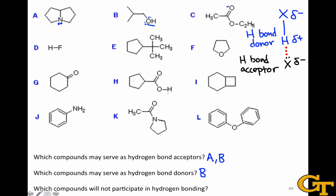Molecule C includes two heteroatoms — two oxygens — each of which has two lone pairs, and so C can, like A and B, act as a hydrogen bond acceptor. However, like A, the heteroatoms in C are not bonded to hydrogens, and so this molecule cannot act as a hydrogen bond donor. Molecule D is hydrogen fluoride, and the fluorine has three lone pairs on it, so this molecule can act as a hydrogen bond acceptor. It also includes an H-F bond, where the heteroatom is fluorine, and so this can act as a hydrogen bond donor as well.